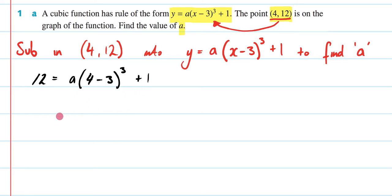Let's now just tidy this up. It's going to be 12 equals a. 4 minus 3 is 1. I'm going to cube that, plus 1. 1 cubed is just 1. 1 times a is just a. So I'm going to be left with 12 equals a plus 1.